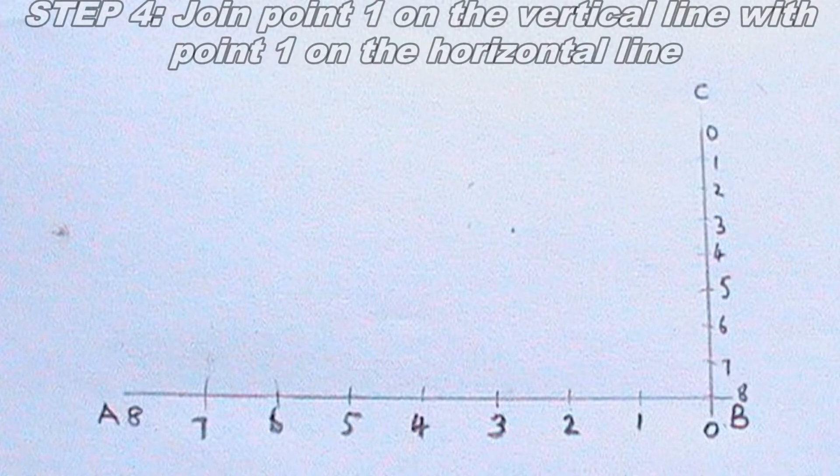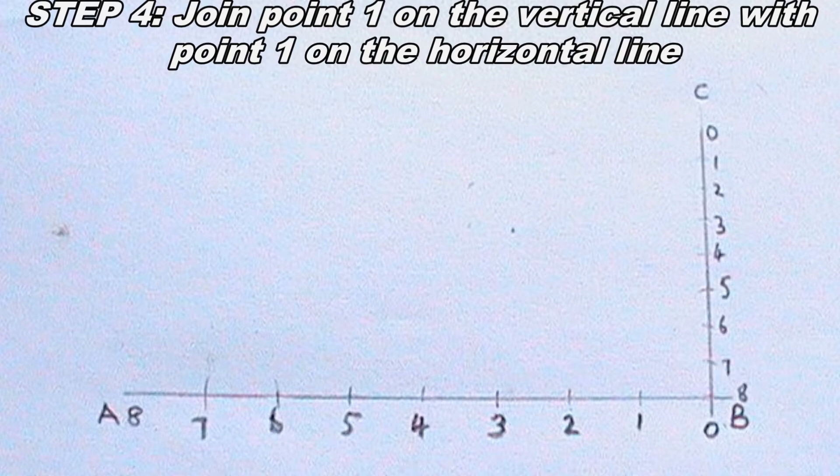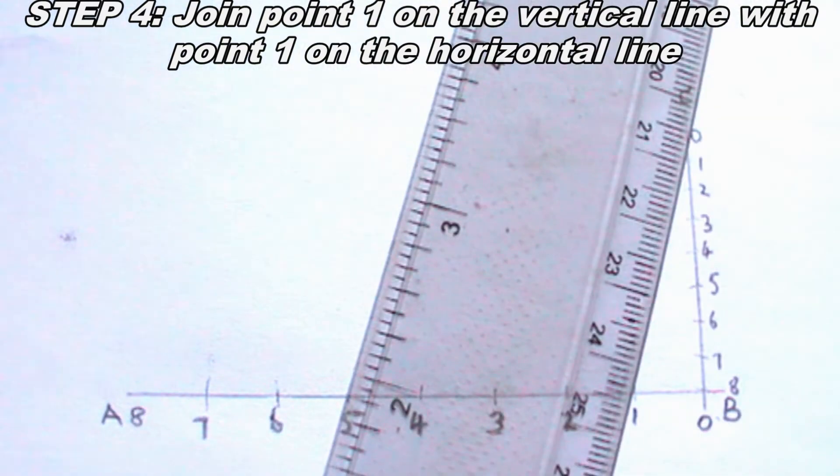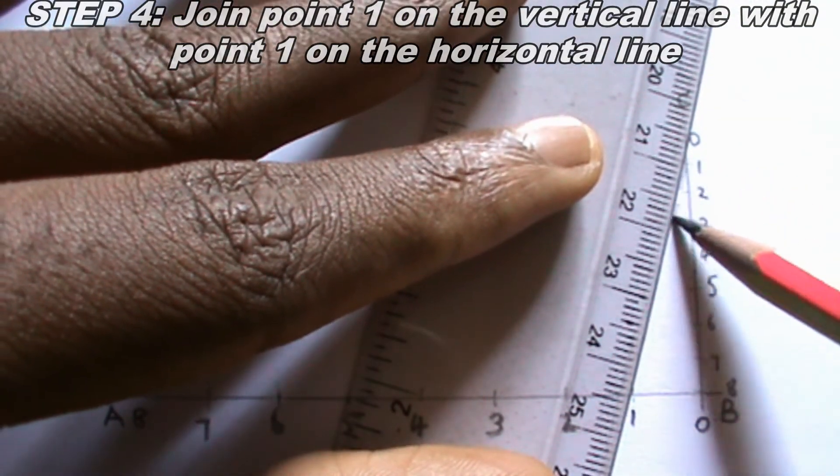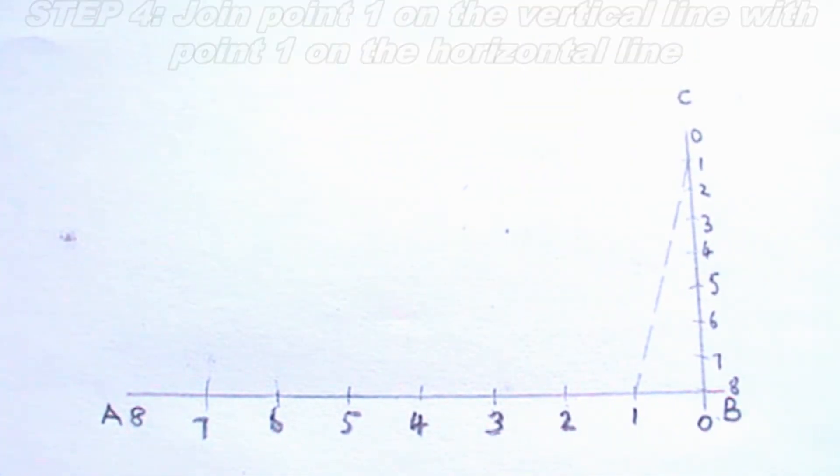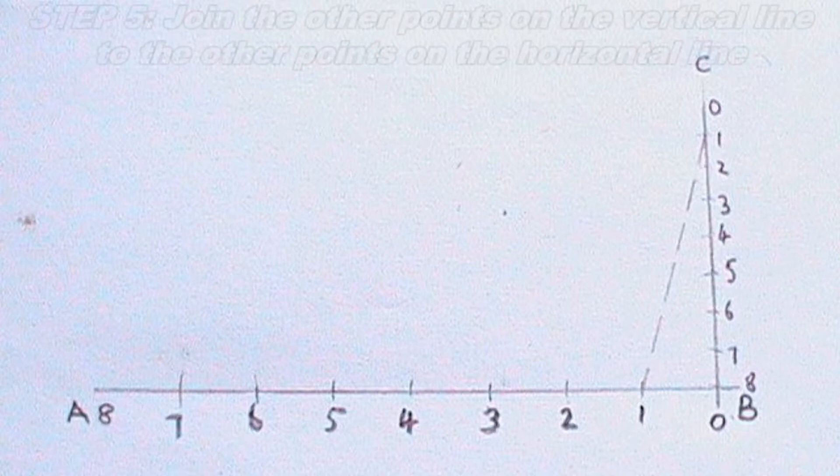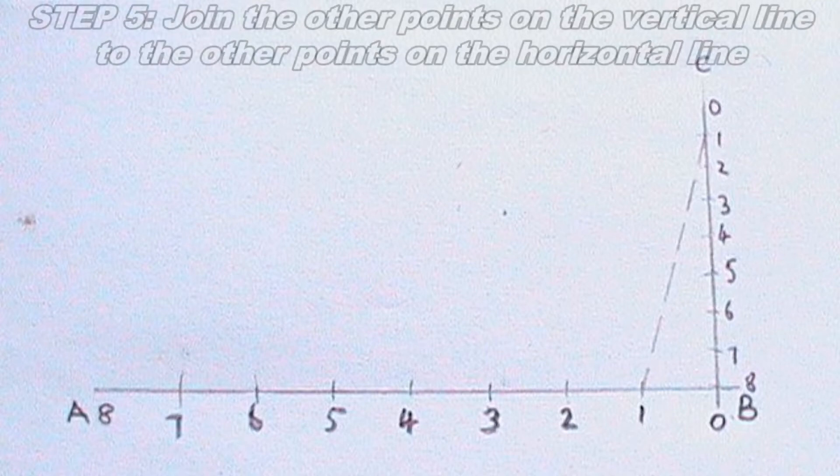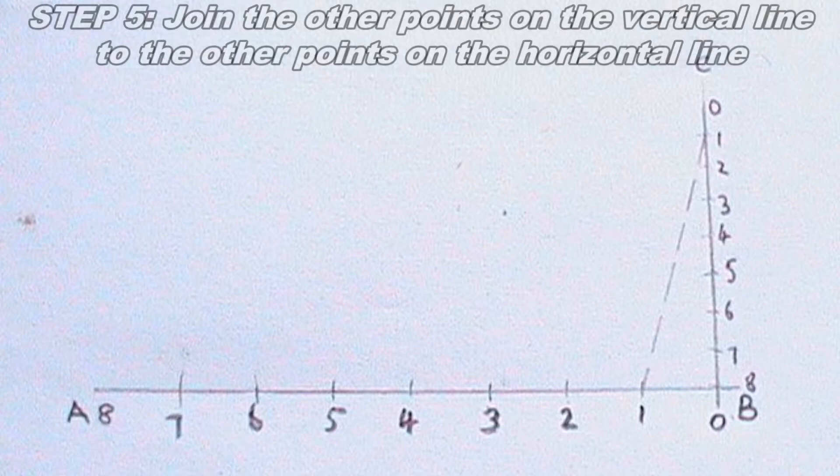The next thing I will do is to join point 1 on the vertical line with point 1 on the horizontal line using my thin dash line. I will also join 0.2 on the vertical line with 0.2 on the horizontal line using thin dashes. I will repeat this same procedure for points 3, 4, 5, 6 and 7.